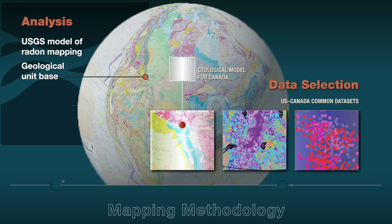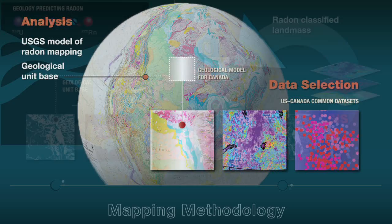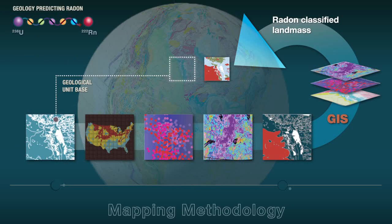Several datasets common to both Canada and the U.S. were identified: geology, geophysics, and geochemical survey information. Geological units form the basic framework for the Canadian map. It is the geology that largely controls the amount of uranium present in any given location, and therefore, the radon.